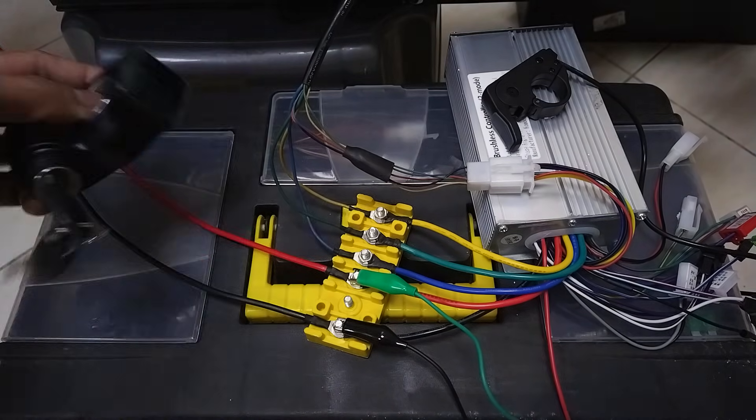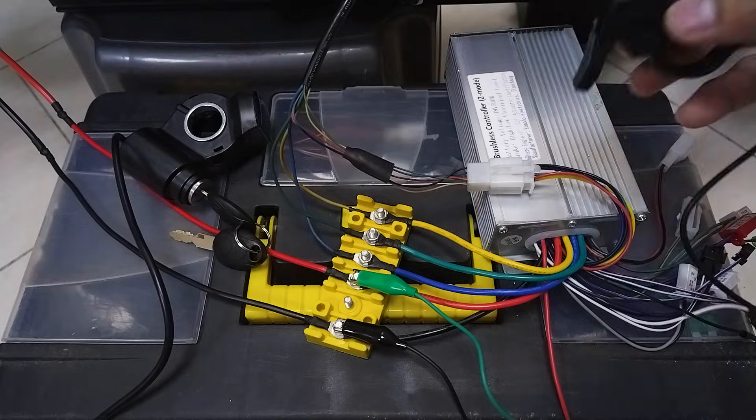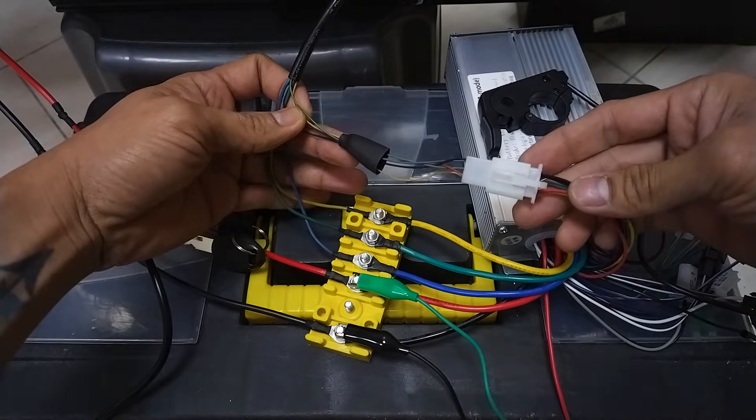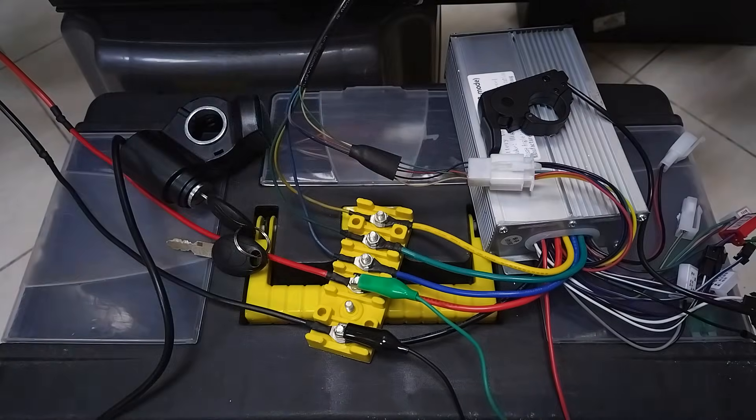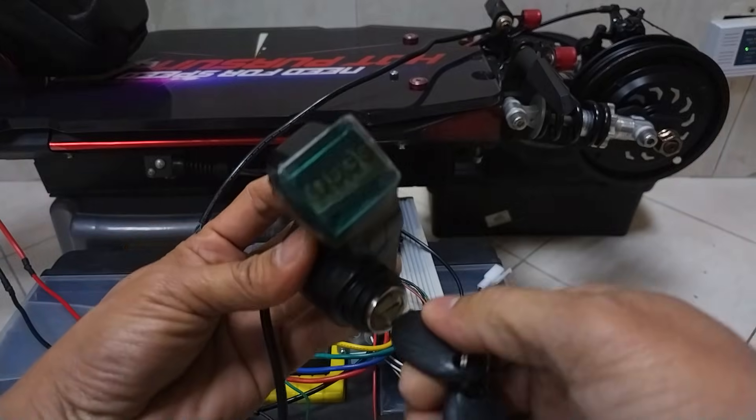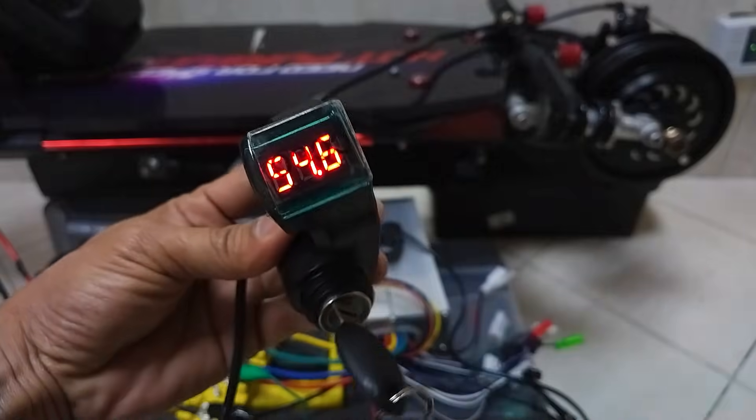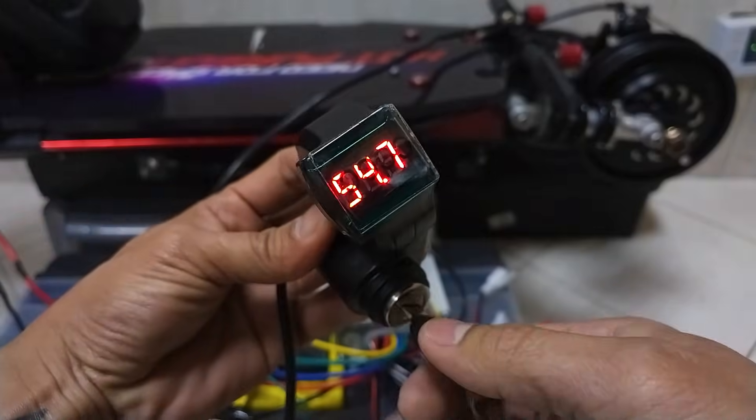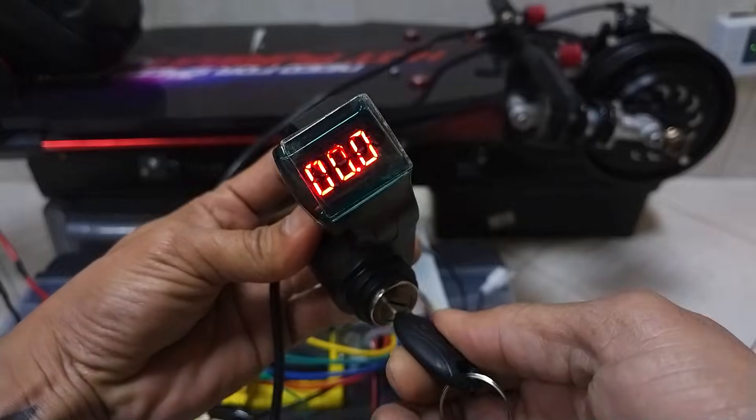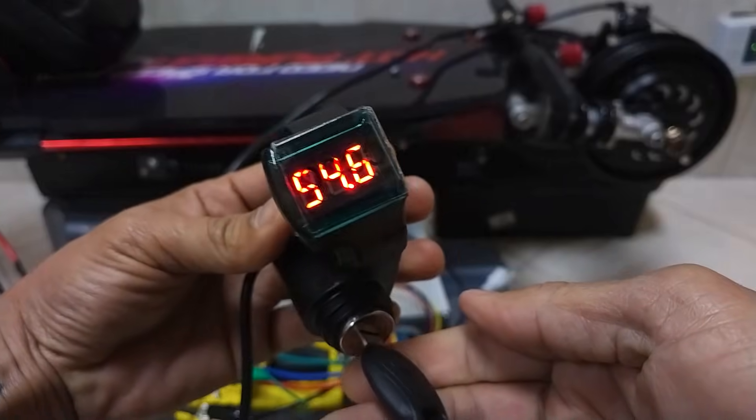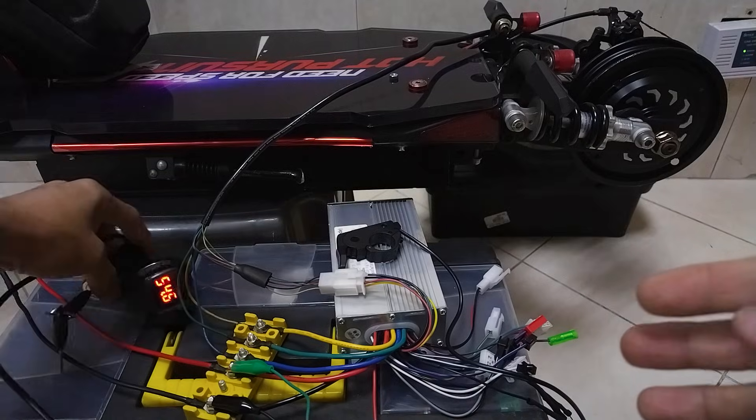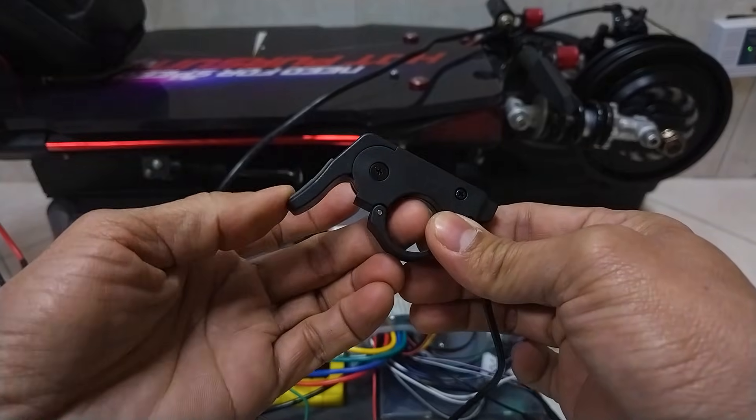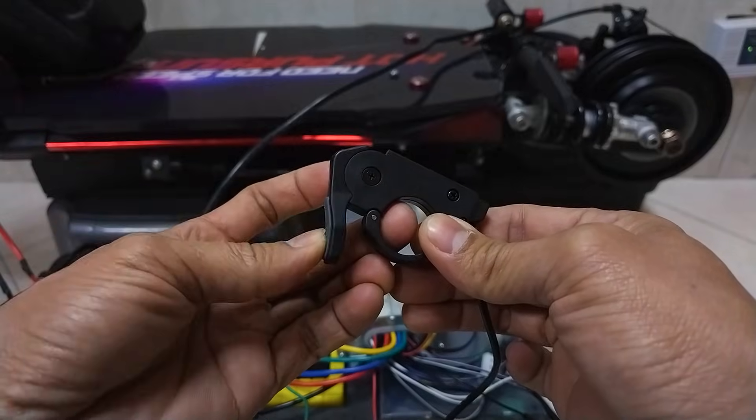Now that all wires are set, time to test the key ignition switch if it's going to turn on or activate the controller. As you can see, it shows the battery level or voltage of the battery.